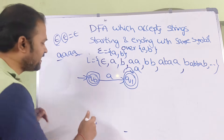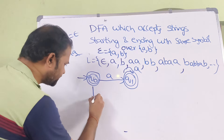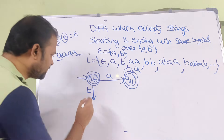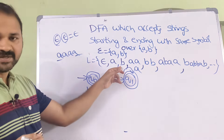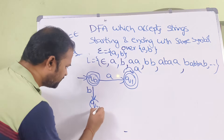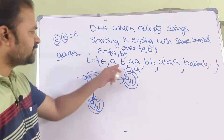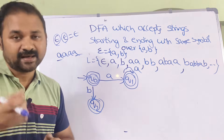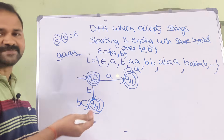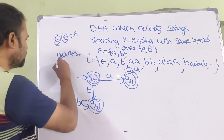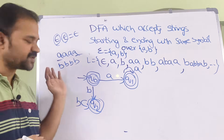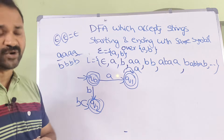Now for the second alternative: if the string starts with B, Q0 on B goes to Q2. Q2 is a final state because B by itself is a valid string. If we apply any number of B's on Q2 we remain in Q2, which stays final, since those strings start and end with B.